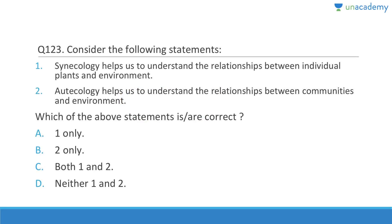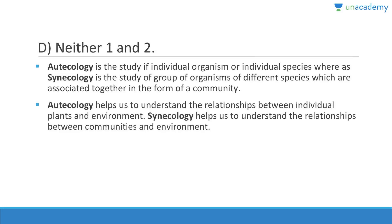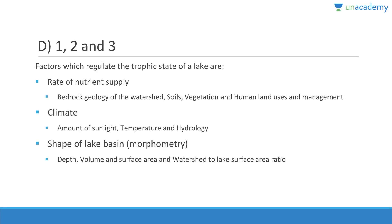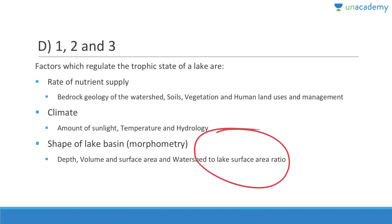The trophic state of a lake is regulated by rate of nutrient supply, climate, and shape of basin — all are correct, so the answer is one, two, three. Eutrophication means good nutrition — if nutrient levels increase due to industrial waste, eutrophication will increase. Factors regulating the trophic state include rate of nutrient supply, sunlight, temperature, hydrology, and the morphometry of the lake basin — depth, volume, surface area, and watershed ratio.